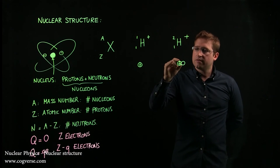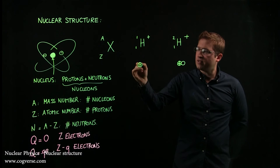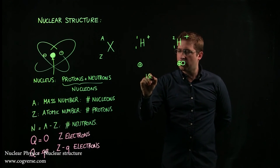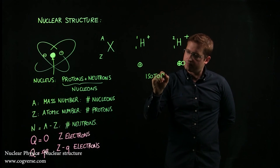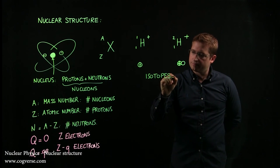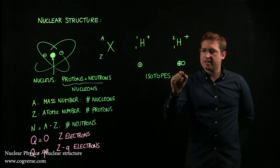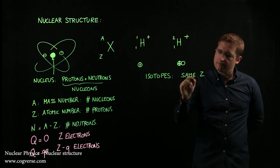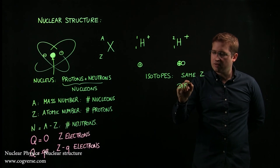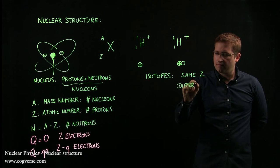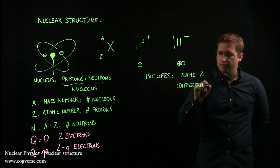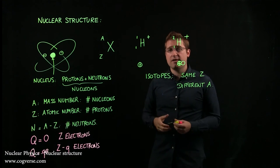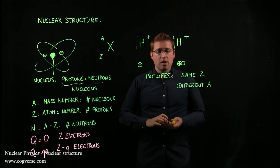But this has a different nucleus than this, and these two elements are called isotopes. Now, they're isotopes because they have the same Z but different A. In other words, they have the same number of protons but they do not have the same number of neutrons.